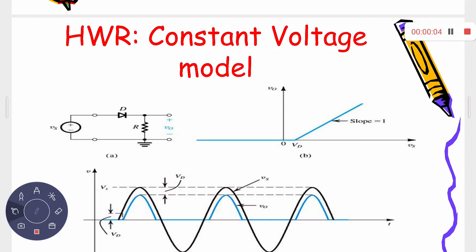We have discussed up to this point the transfer characteristics of the half-wave rectifier. We saw last day what happens when the diode is not ideal — if the diode follows a constant voltage model, then the transfer characteristics of that circuit look like this. We also calculated the peak inverse voltage experienced by the diode, which equals the peak input voltage Vs, even under the constant voltage model.